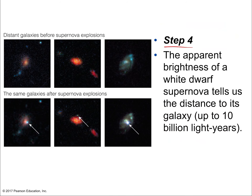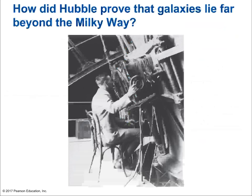Step four: the apparent brightness of a white dwarf supernova tells us the distance to galaxies up to 10 billion light years away. The furthest we can look is about 13 billion light years, so we're looking almost to the very edge of the observable universe. Now we can measure distances outside our own galaxy using standard candles.